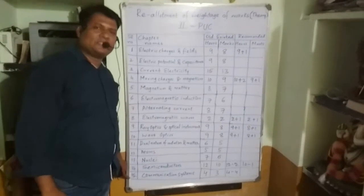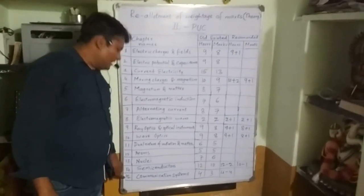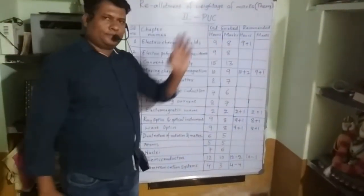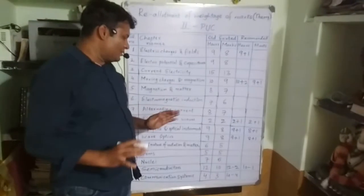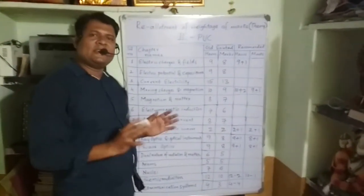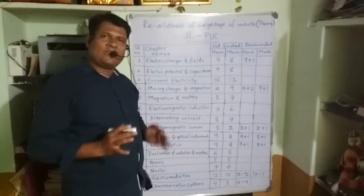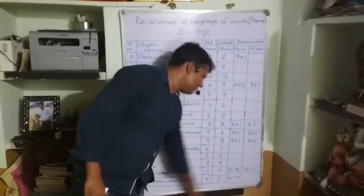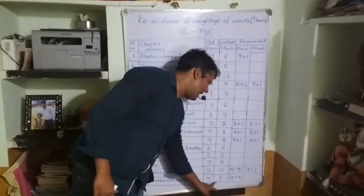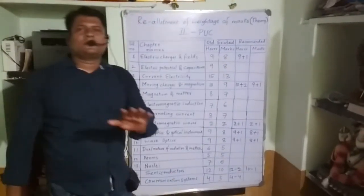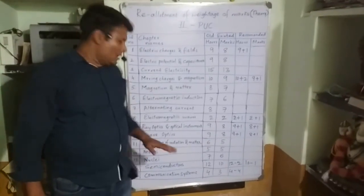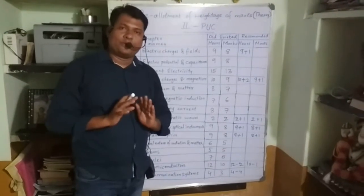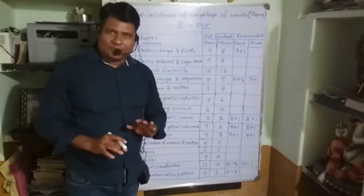Now we come to the major change — the fifteenth chapter, Communication Systems. This chapter existed for the old batches until 2018-19. In 2019-20 they made a change: teaching hours went from four to four minus four — that is zero — and no marks are carried in this chapter. It means the chapter has been completely deleted from the second PUC syllabus, along with some five to six concepts.